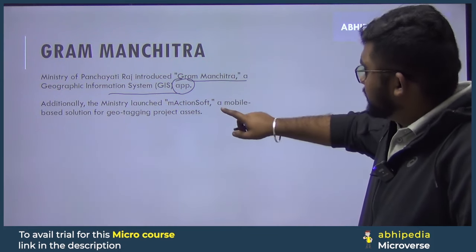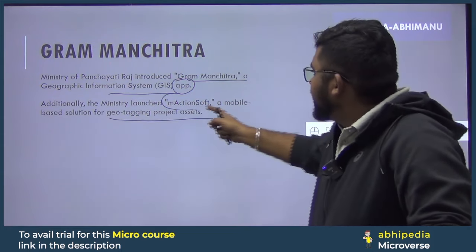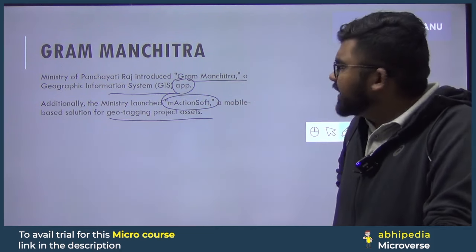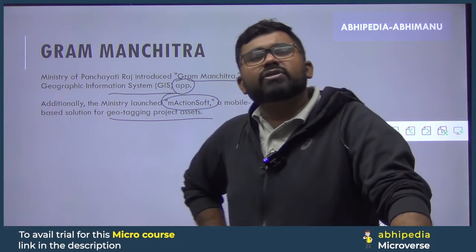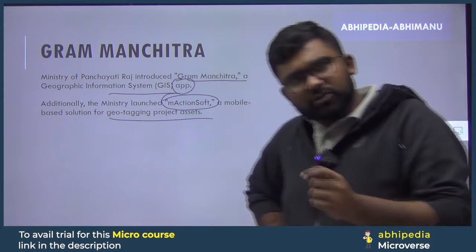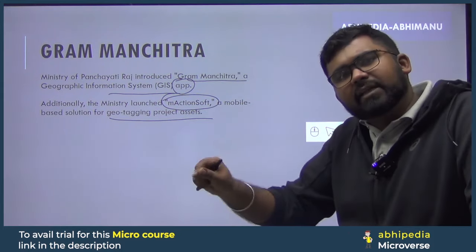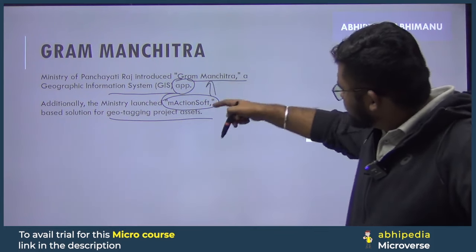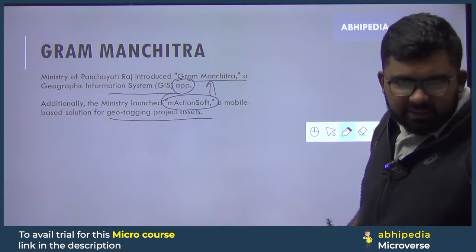Geotagging — there is another mobile-based solution called M Action Soft. In the past, questions have been seen where they directly asked the name: 'M Action Soft, recently heard in news, is a type of what?' — it is a type of geotagging solution. In this, pictures are taken and geotagged — marking what exists at which location. It is basically an extension within Gram Manchitra.